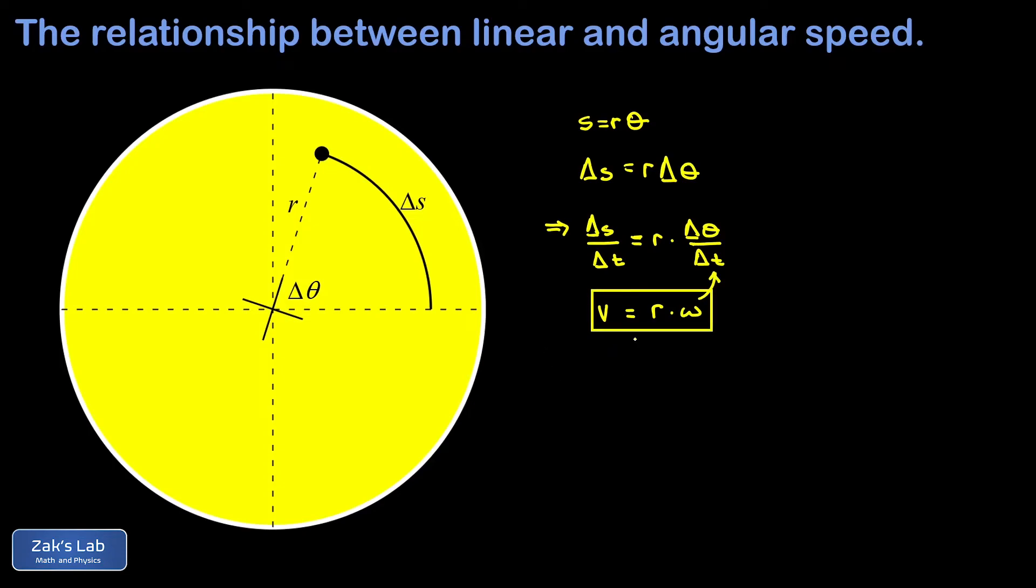So we've arrived at this extremely useful formula v equals r omega, describing the tangential speed of an object in uniform circular motion in terms of the radius of curvature and the angular speed of the rotation. And this formula is going to play a critical role in deriving the equations of motion for uniform circular motion.